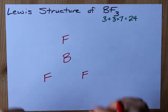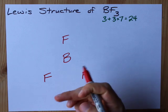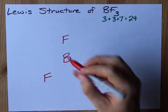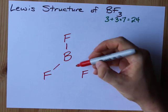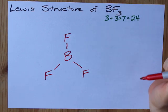I personally like to put single bonds connecting the central atom to each of the outer atoms first. Two, four, six electrons taken care of.